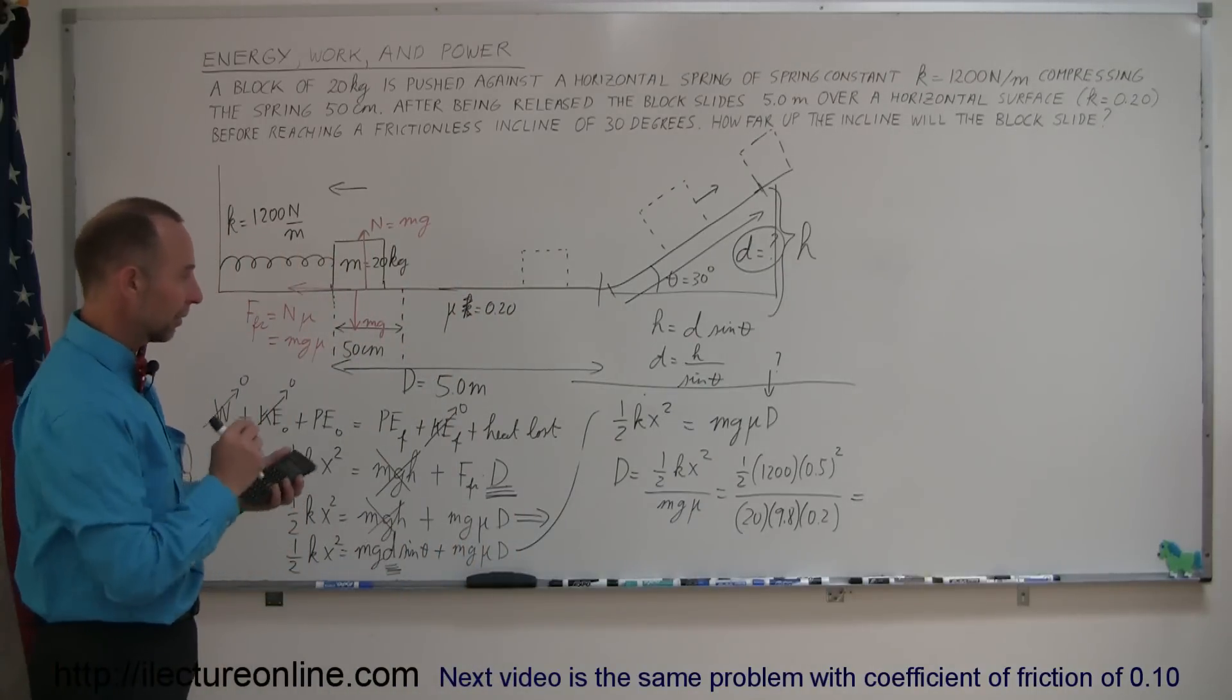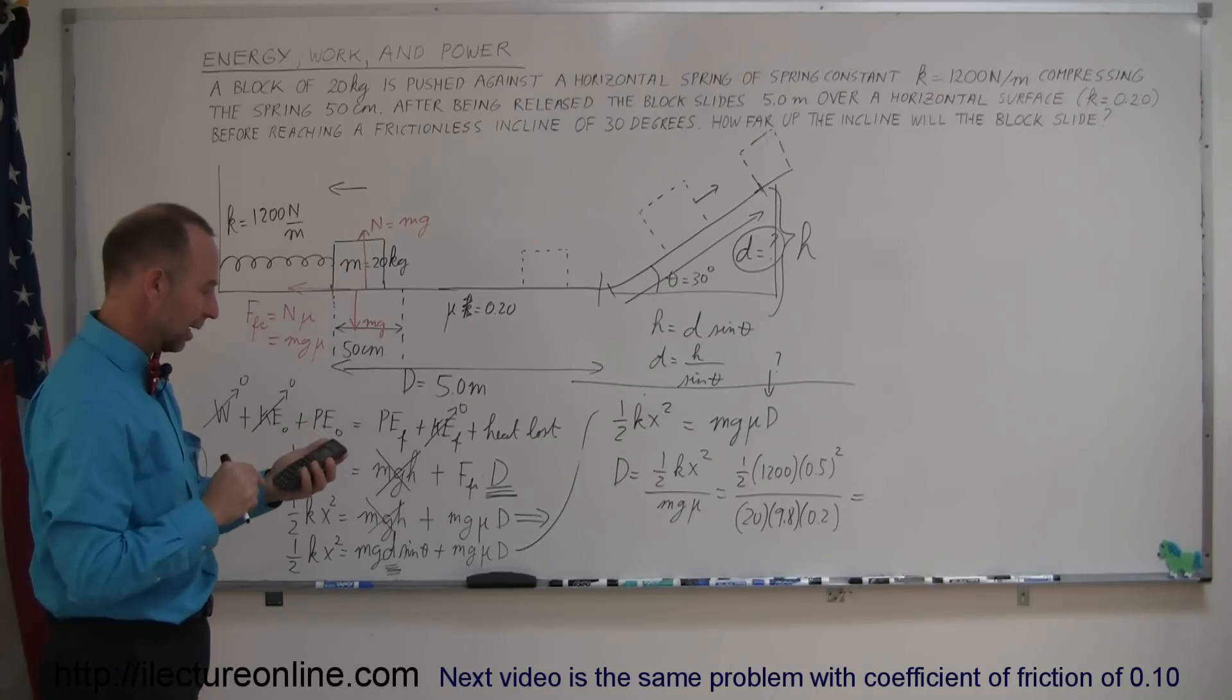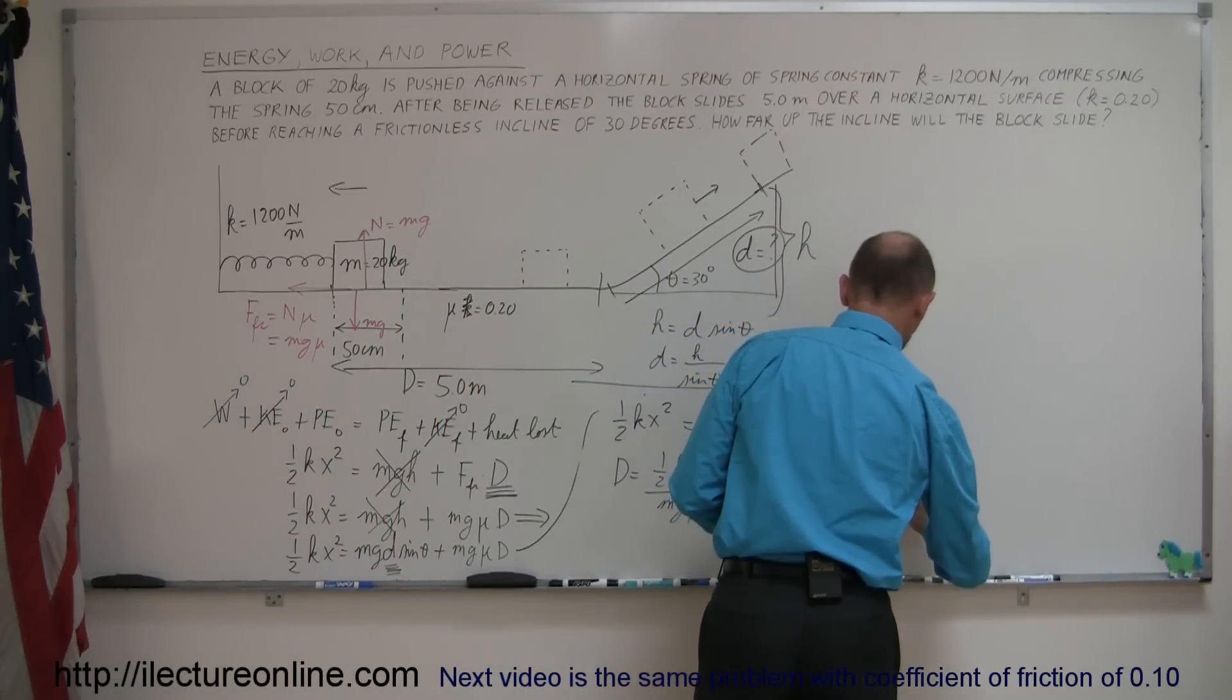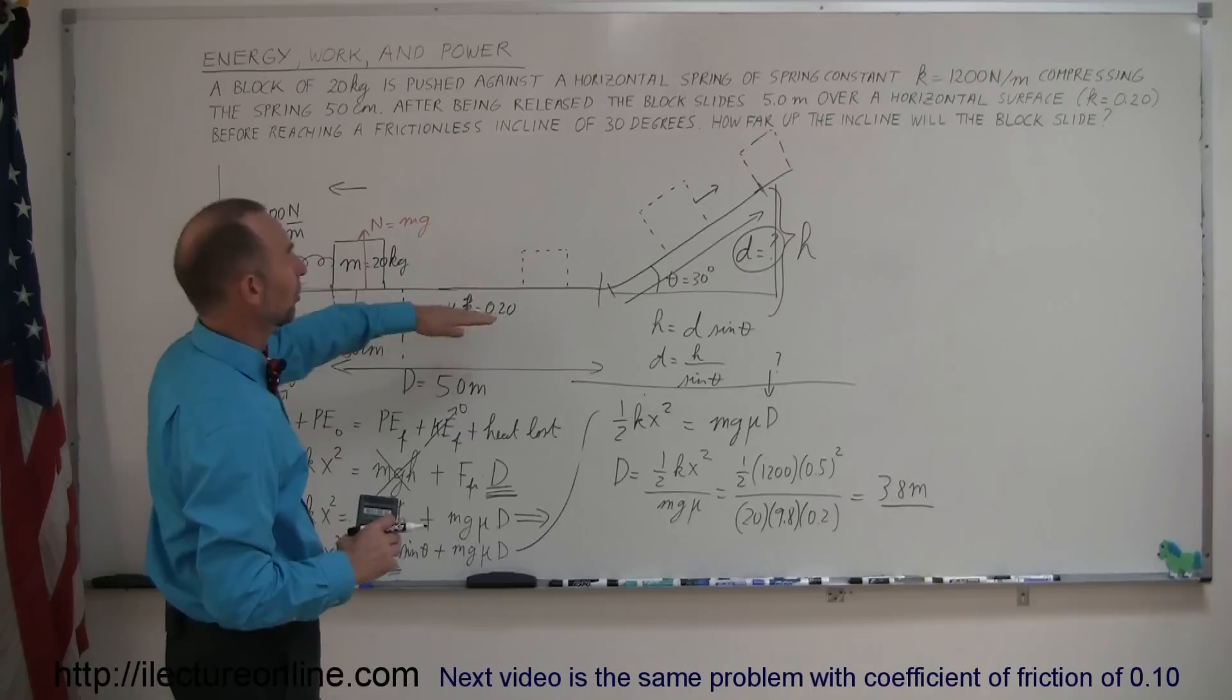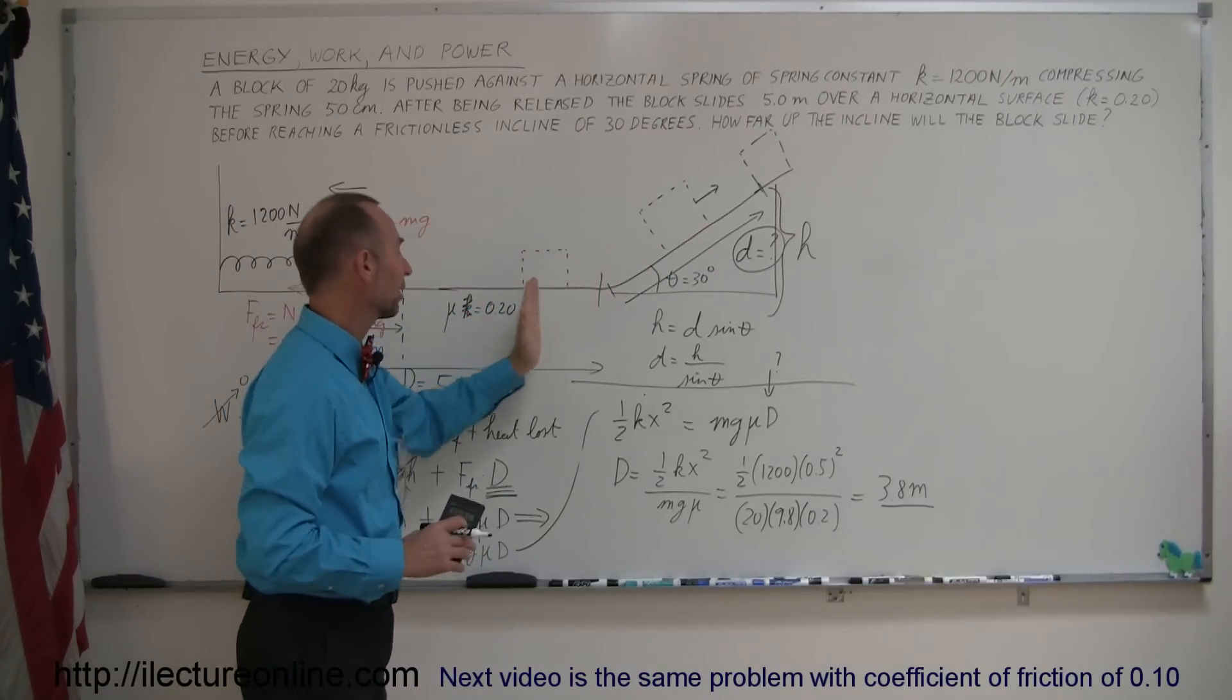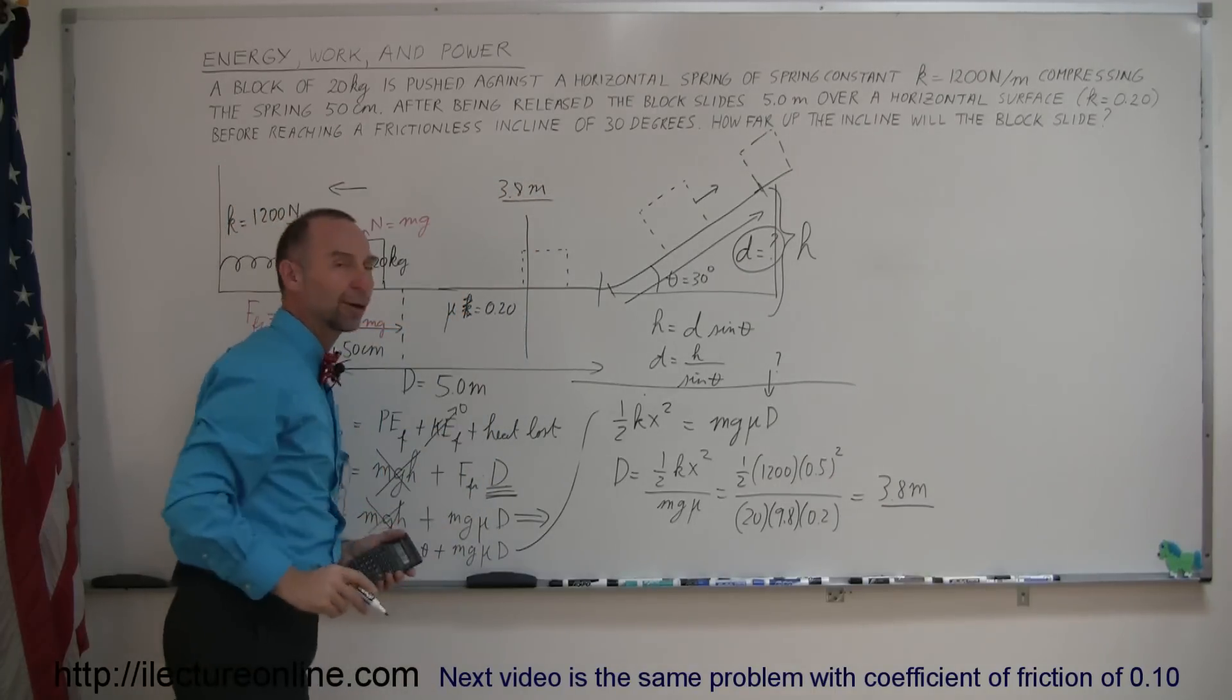So now we get, that's, if I remember right, that's 150 divided by 20 divided by 9.8 and divided by 0.2 and I get 3.83 meters or 3.8 meters. So the true answer is, a little bit deceiving, the way the question was asked, it doesn't make it up the incline. The block will actually stop before reaching the incline after a travel distance of 3.8 meters. And that's how you do that problem.